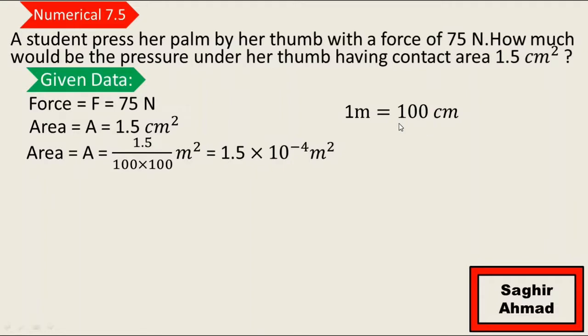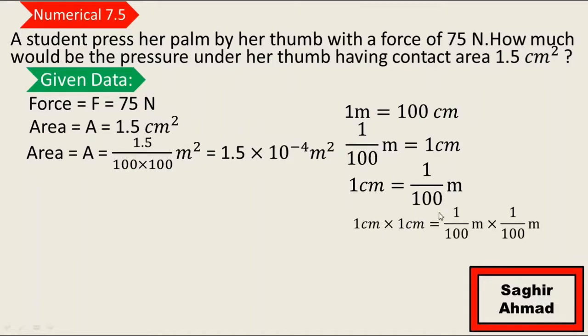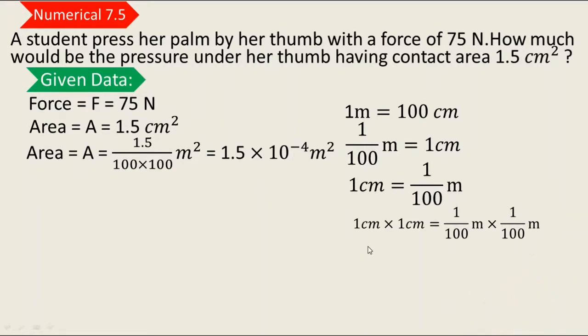So centimeter to meter, how do we convert? 1 meter is equal to 100 cm. So 1 cm is equal to 1 over 100 meters. If we use centimeter squared, we multiply by 1 over 100 meters and 1 over 100 meters. So 1 cm² converts to 1 over 100 times 100, which gives us 100 in the denominator.